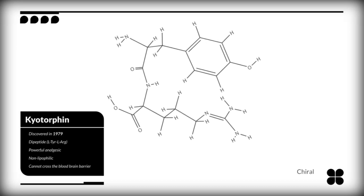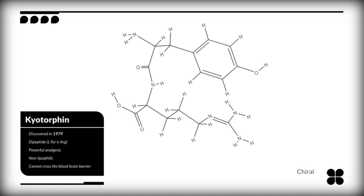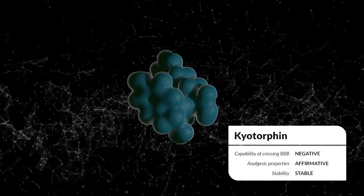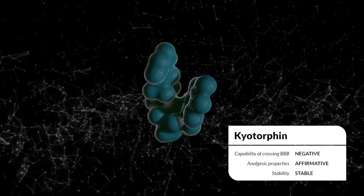Despite being a powerful analgesic, it cannot reach the brain. Researchers attempted to create a kyotorphin derivative able to reach the brain while maintaining its ability to reduce pain.